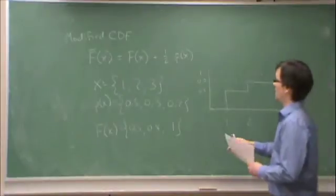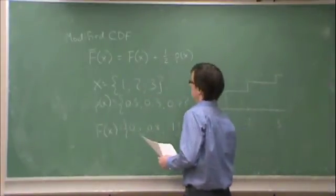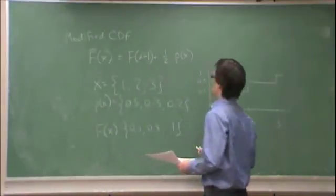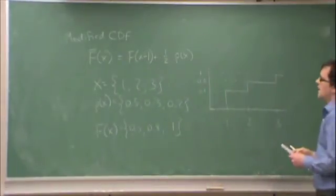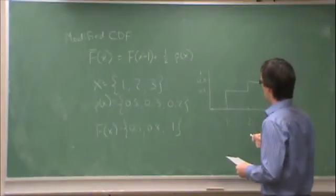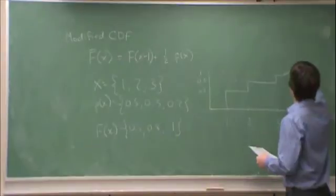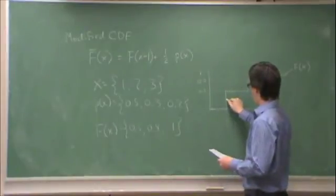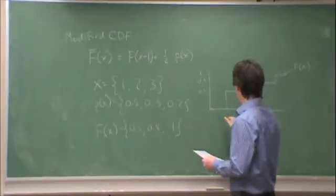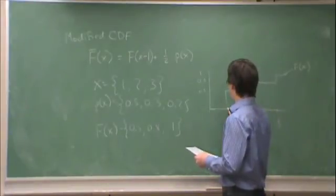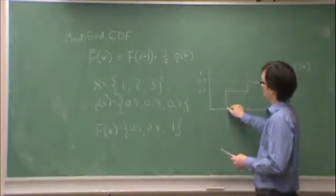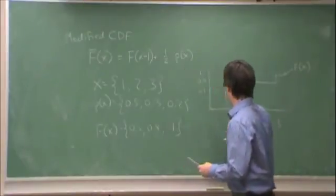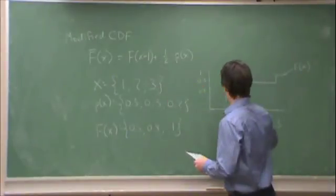Now, correction, f bar is equal to f of x minus 1 plus one half p of x. So, what does f bar look like? This is f of x, f bar is basically halfway off each of these intervals, where f bar lives. So, at, up to 1, it's always 0. Then at 1, it's, actually, excuse me. Since x is only defined over these integers, f bar of x can only be defined over those integers as well.